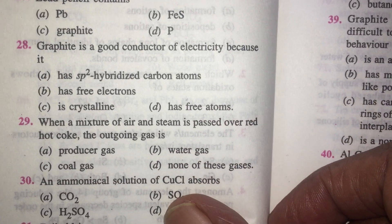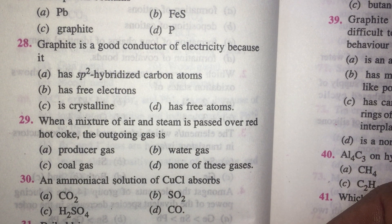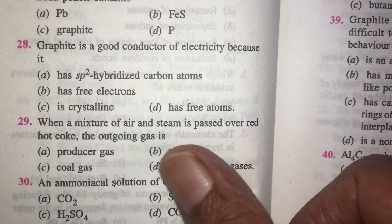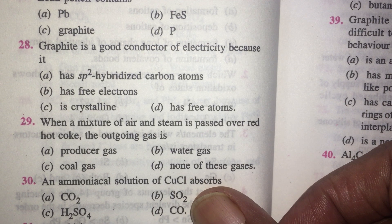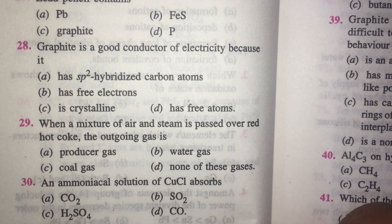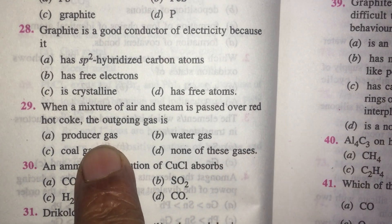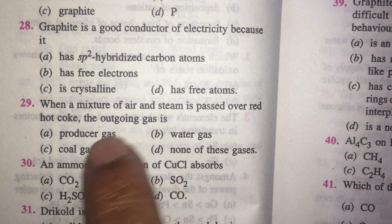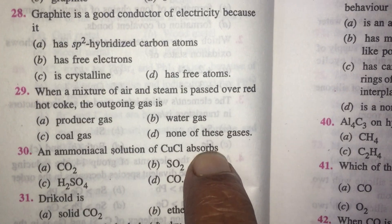When a mixture of air and steam is passed over red hot coke, the outgoing gas is called water gas. However, if you are passing air as well, it is not water gas. The answer is neither water gas nor producer gas — it is a mixture of these two. To have producer gas you must pass only air; for water gas you must pass only steam. Passing both gives a mixture, so the answer is uncertain — there is no appropriate option.